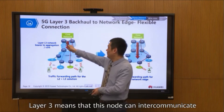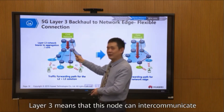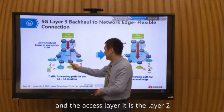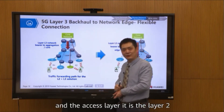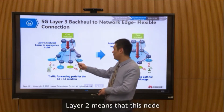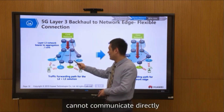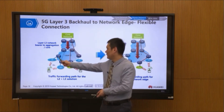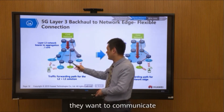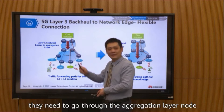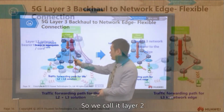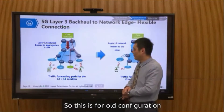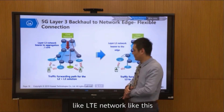Layer 3 means that nodes can inter-communicate with each other directly. Between the aggregation layer and the access layer, it is Layer 2. Layer 2 means that nodes cannot communicate directly — they need to communicate through Layer 3. We call it the data link layer. So this is for the old configuration like the LTE network.